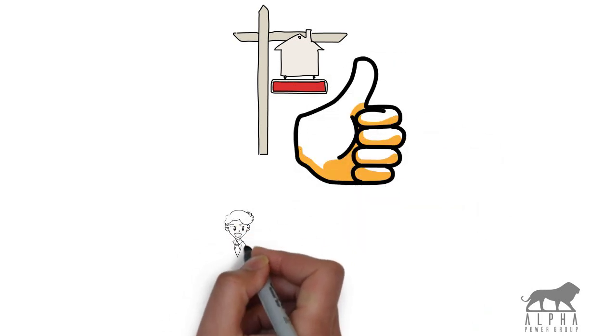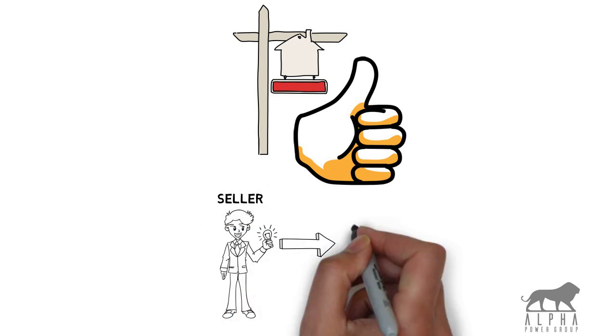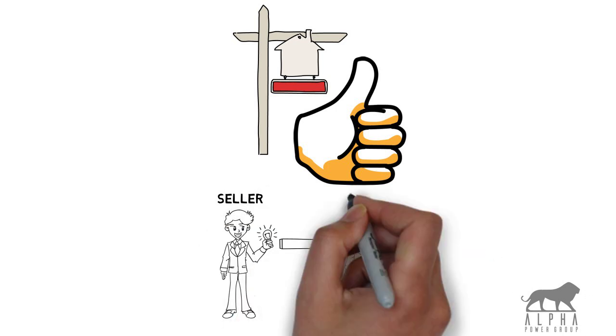Home sales with PPAs attached are fairly commonplace and typically is as simple as changing the utility into a new name. Furthermore, it should be seen as a benefit to the buyer seeing as they are getting a house with reduced rates for electricity.